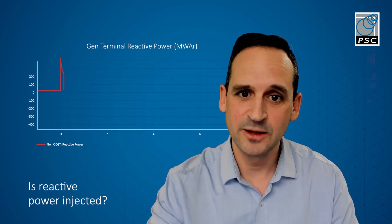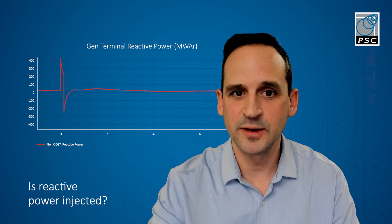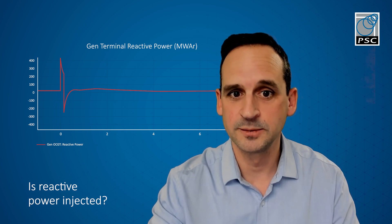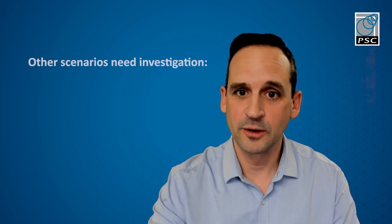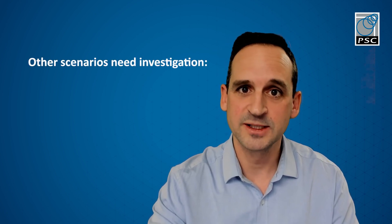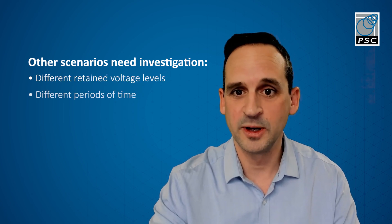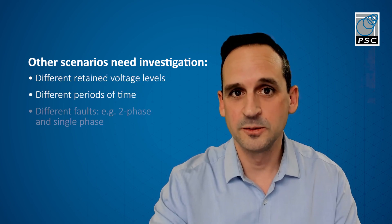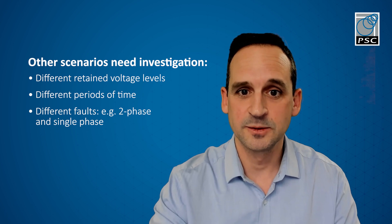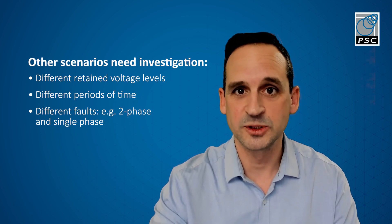Finally, we can see from the generator queue graph that the generator delivers reactive power during the fault. This is a single fault ride-through scenario. Several other fault ride-through scenarios must also be investigated, looking at different levels of retained voltage for longer periods of time, and also different faults such as two-phase and single-phase must also be investigated.